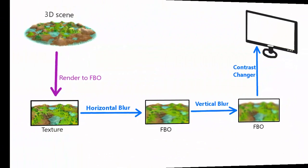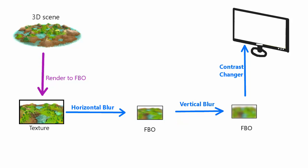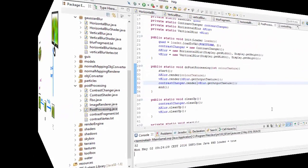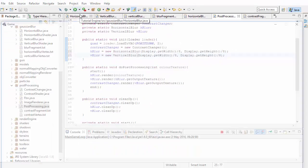Luckily there's actually a very easy way of increasing the blur that also improves performance. Instead of the textures being the same size as the display, we can scale them down to a much smaller size. That way our 11x11 kernel takes up a much bigger portion of the texture, resulting in more blur — the smaller we make the textures, the blurrier the output will be. In the code, let's divide the dimensions of the FBOs by 8, and if we run that you can see the output image is now a lot blurrier.